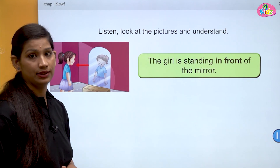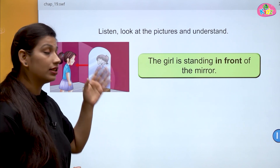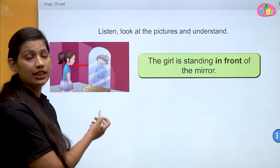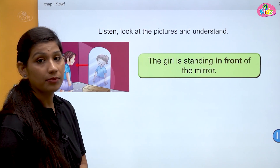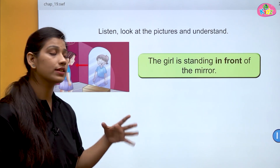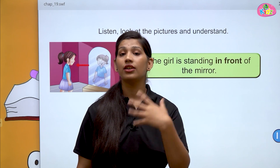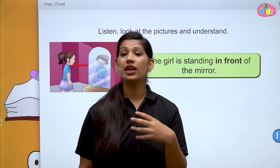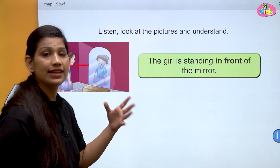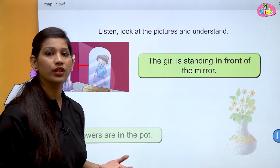Here you can see the girl and the mirror. The girl is standing in front of the mirror — mirror ke saamne khadi hai. Aap 'in front of' use kar sakte hain, ya sirf 'in front' bhi. Agar main kisi cheez ke saamne khadi hoon, jaisi ki right now I am standing aapke saamne, main bolongi: in front of. I am standing in front of you. So that is called as in front of — ke saamne. The girl is standing in front of the mirror.